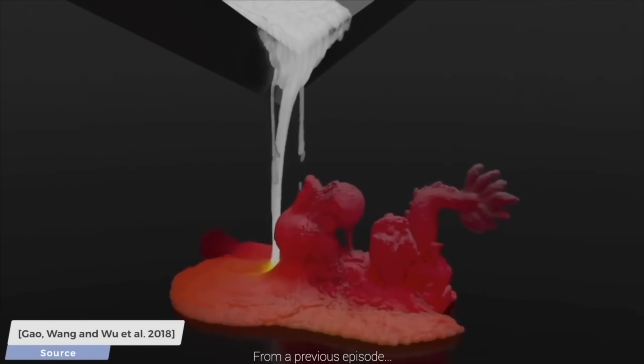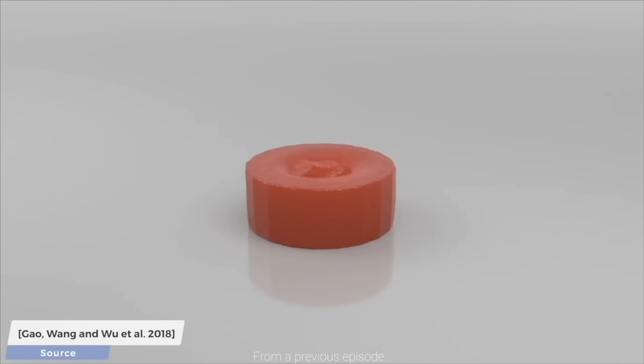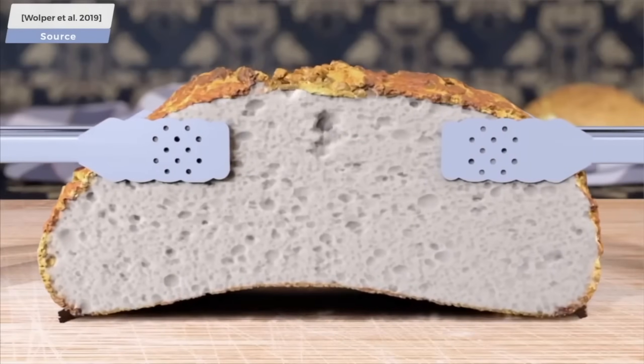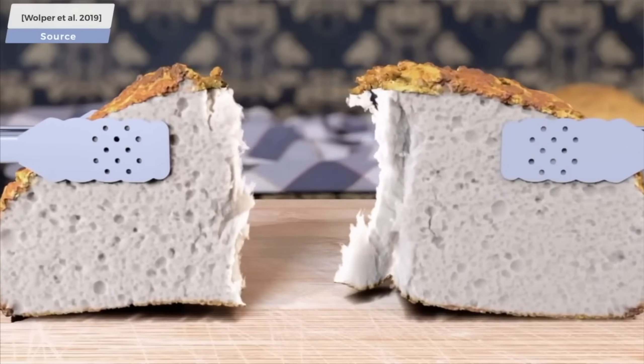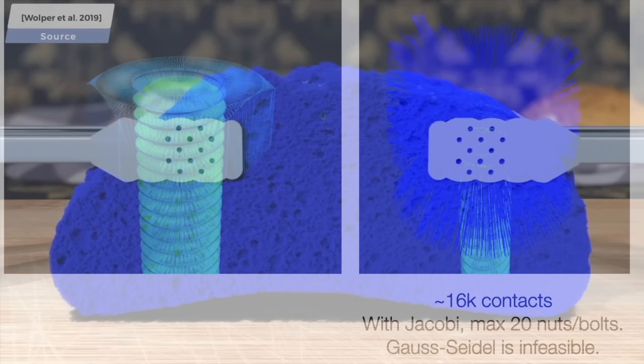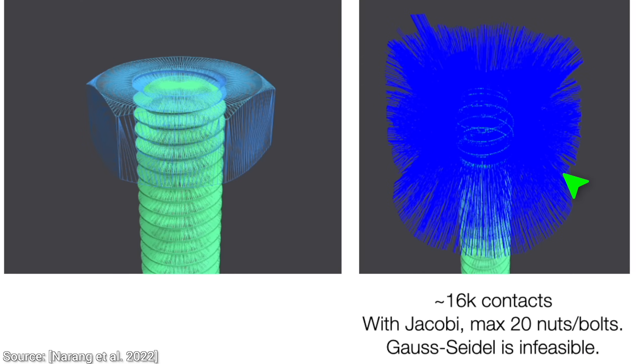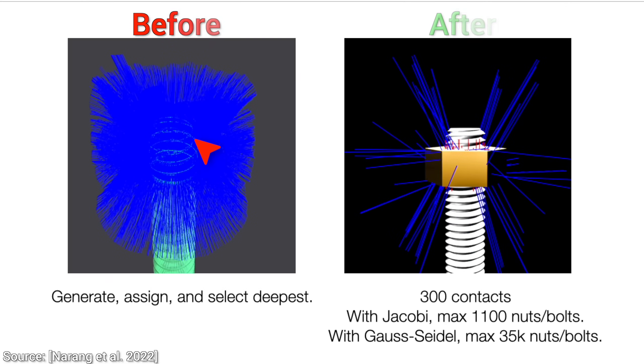Due to computational and memory requirements, we could simulate at most about 20 nuts and bolts, which is not sufficient for a large-scale simulation. We need to go faster. You see, we still need to compute the interaction between 16,000 contact points. But, hold on to your papers, fellow scholars, because this work also proposes a way to reduce that by about 98% down to about 300. Wow!